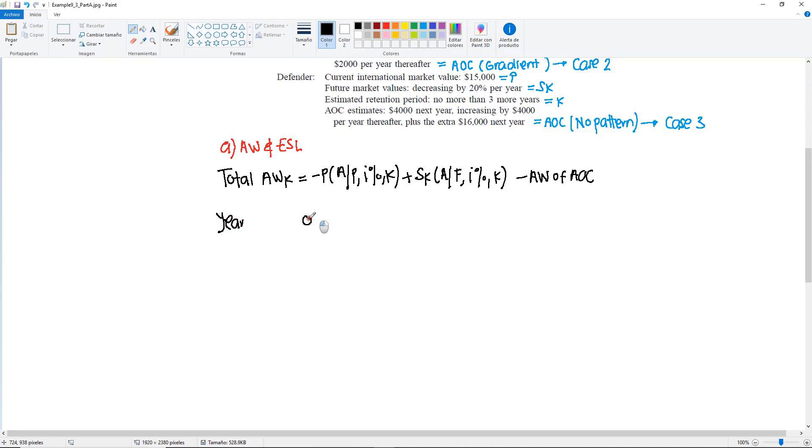Okay, so we have year, and we only have year zero, year one, year two, and year three. We have our first cost. Then we have the market value, which is your SK, and then we have the annual operating cost. For year zero, we have our P, minus $15,000, no more P's here. Then we calculate the market value, which is going to be 20% less from here. So from 15, 20% is 3, so it's 15 minus 3. We have $12K, then $9,600, and then $7,680.